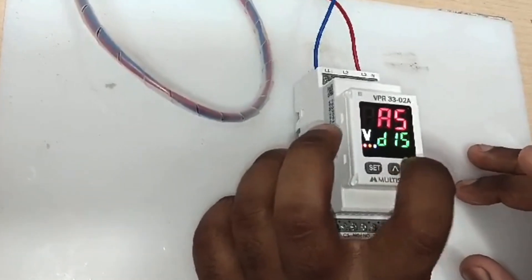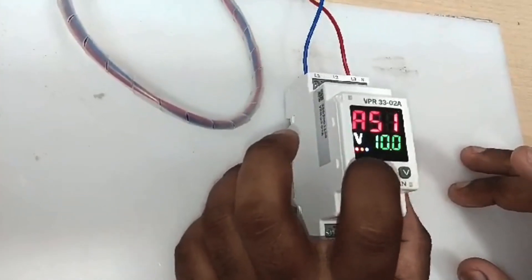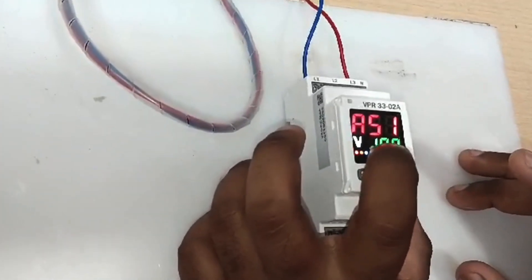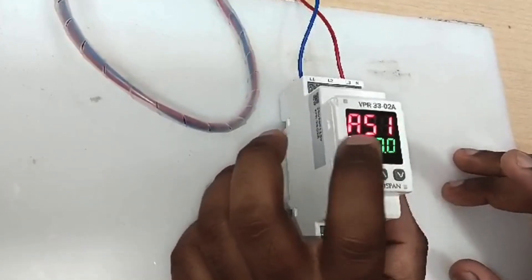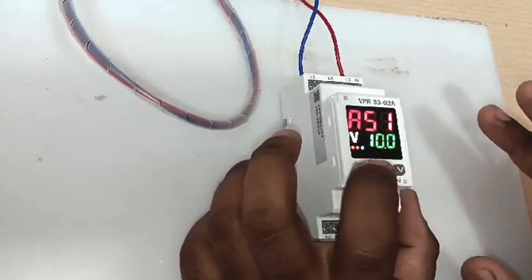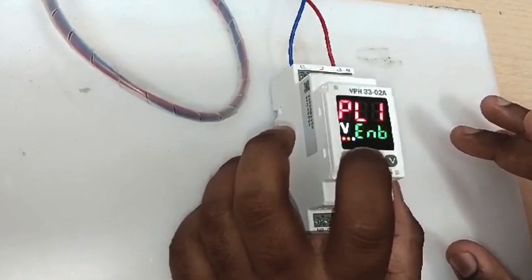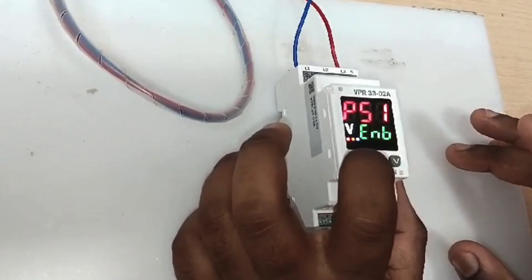In lift applications or something, if you want you can disable also. Now we will keep it as enabled so it will phase detect work. Any phase like phase to phase, if any phase of 10 volts comes, it will give phase asymmetry. Then phase loss is also there. Phase sequence is there.